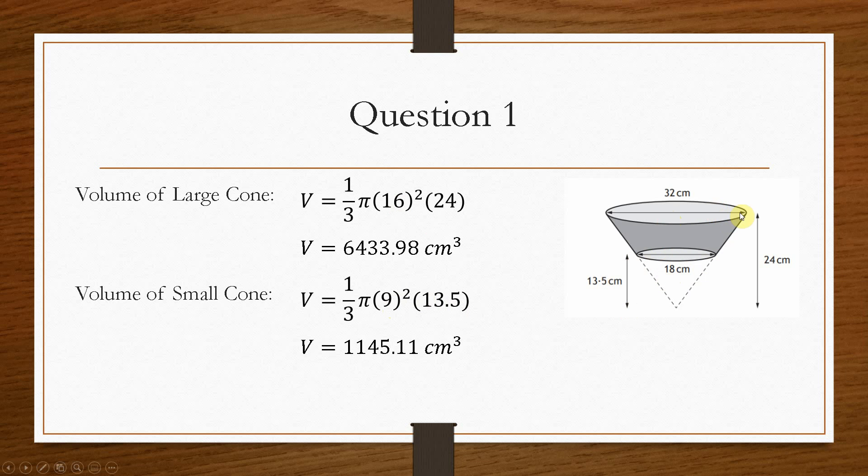Now, the volume of the carton is the shaded area. So all we need to do is say, what is the volume overall, and what is the volume of this, and we take them away from each other. Because the remainder would be the volume of the shaded region. So the volume of the carton will be the 6433.98 minus the 1145.11. So that will tell us that the volume here is 5288.87.